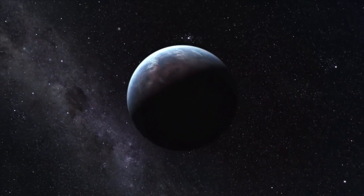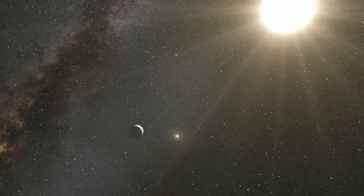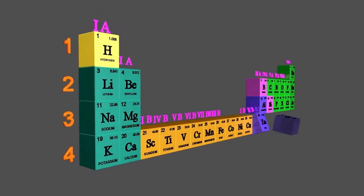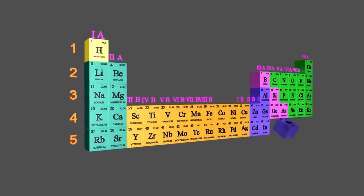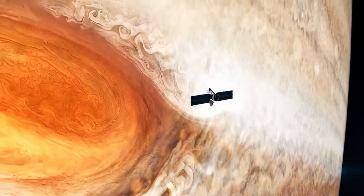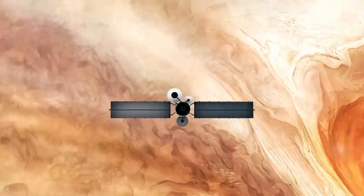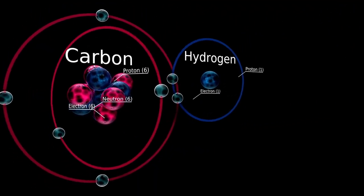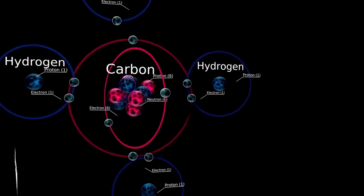Prior discoveries like Oumuamua in 2017 and 2I Borisov in 2019 had already pushed the boundaries of astronomical imagination. Each brought new puzzles, but 3I Atlas added something more - the sheer suddenness of its arrival. One day nothing, the next, a frozen remnant from a system billions of kilometers away was cruising past us. Scientists had long suspected interstellar comets existed, but seeing one so clearly and so active was an astronomical gift.